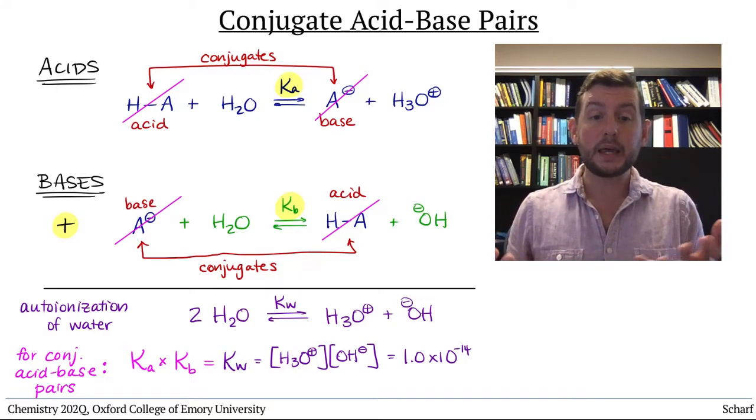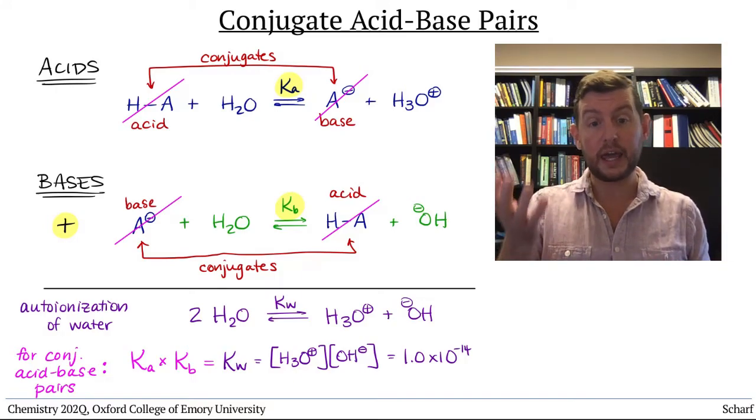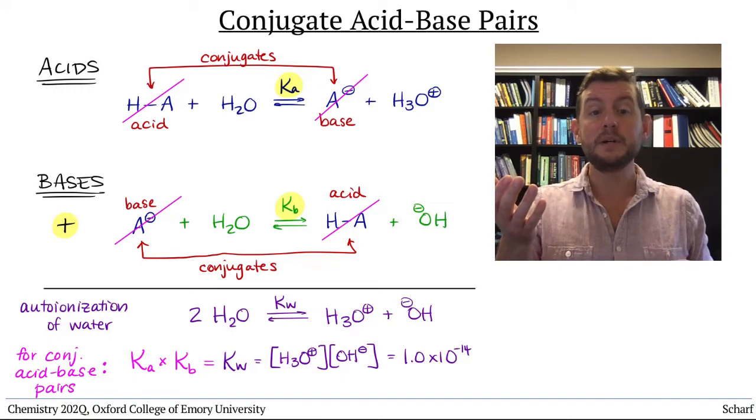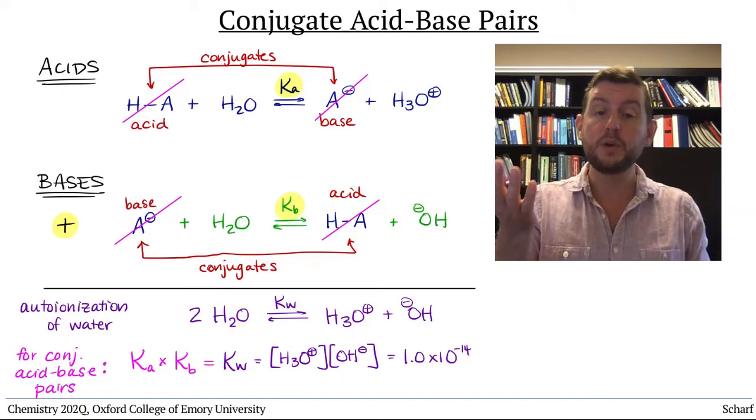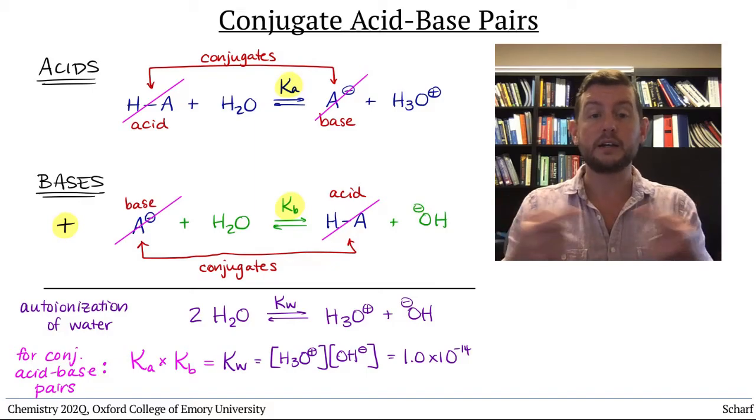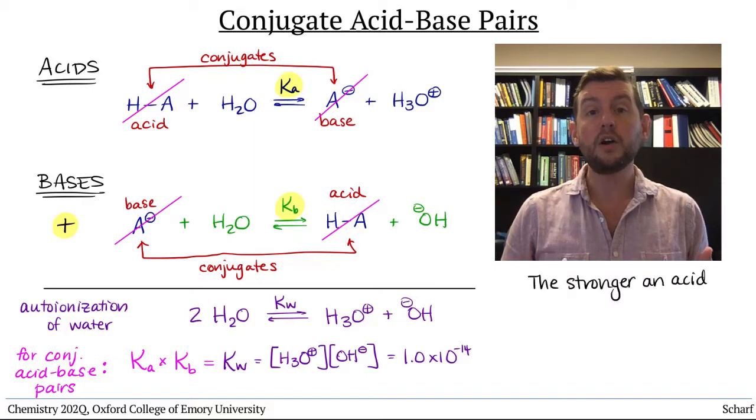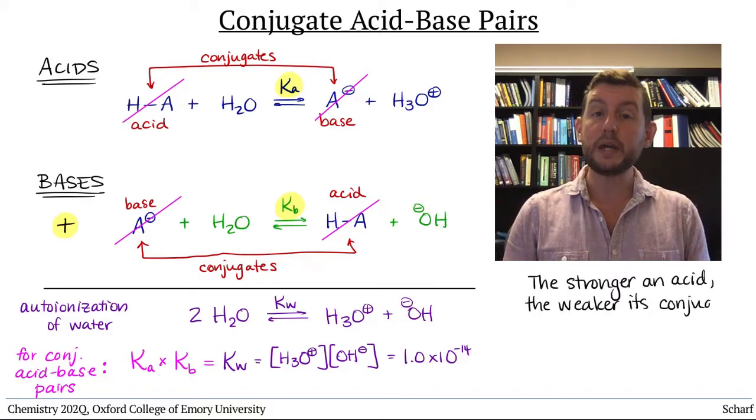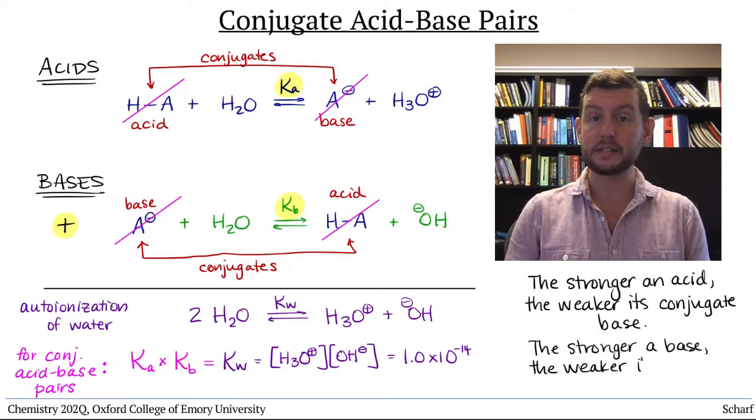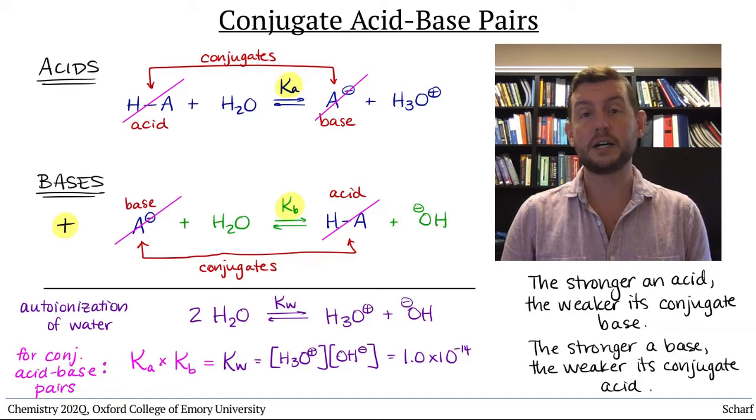Qualitatively, this means that an acid with a large Ka, that is a relatively strong acid, must have a conjugate base with a relatively small Kb, a pretty weak conjugate base, and vice versa. The stronger an acid, the weaker its conjugate base, and the stronger a base, the weaker its conjugate acid.